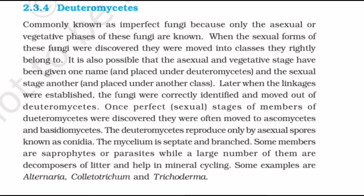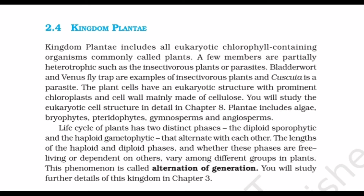Some members of Deuteromycetes are saprophytes or parasites, while a large number are decomposers of litter and help in mineral cycling. Examples are Alternaria, Colletotrichum, and Trichoderma. Now, a brief introduction to the fourth kingdom in Whittaker's system of classification — Kingdom Plantae. Kingdom Plantae includes all eukaryotic, chlorophyll-containing organisms commonly called plants. A few members are partially heterotrophic, such as insectivorous plants or parasites. Bladderwort and Venus flytrap are examples of insectivorous plants, and Cuscuta is a parasite. Plant cells have a eukaryotic structure with prominent chloroplasts and cell walls mainly made of cellulose.